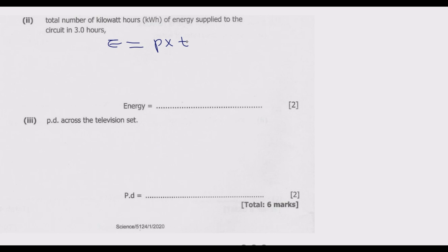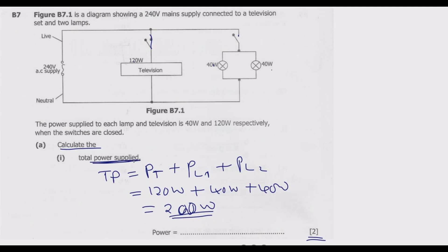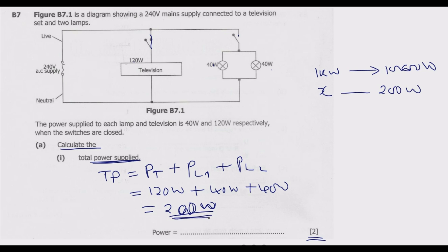What we need to do is convert the energy supply we found from watts to kilowatts, then multiply by the time to find the kilowatt-hours. We know that one kilowatt equals 1000 watts. So we need to convert 200 watts to kilowatts. Once we convert to kilowatts, this will be straightforward to deal with.